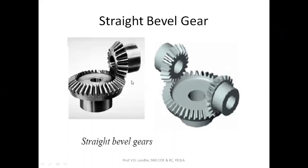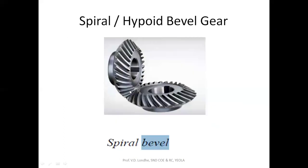In straight bevel gears, the teeth are straight with respect to each other. In spiral or hypoid bevel gears, a slight smooth curvature is provided. In straight bevel gears, the contact ratio is maximum but friction is also maximum, and vibration is maximum. In spiral bevel gears, there is line or point contact, so power transmission is maximum and vibration is less. The operation in straight bevel gears is also noisier compared to spiral or hypoid bevel gears.